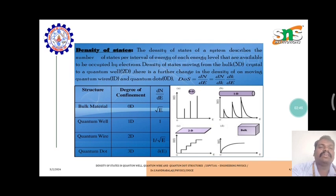The structures show different types of confinement and different density of states. Bulk structure material with 0 dimension confinement has density of states proportional to square root of E. Quantum well material with 1 dimension confinement has constant density of states. Quantum wire structure material is proportional to 1 by square root of E. And the quantum dot material with 3D confinement is like a delta function.